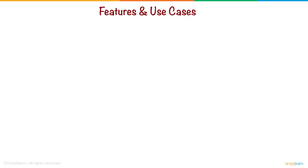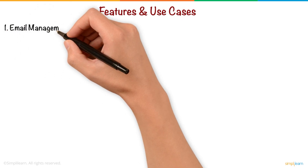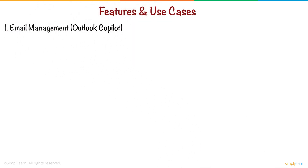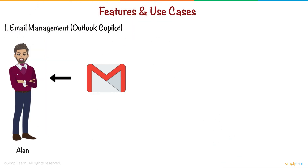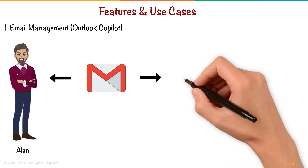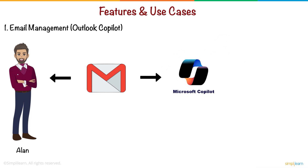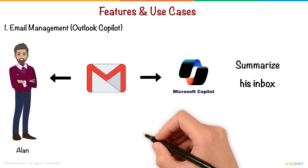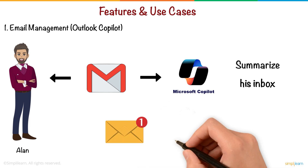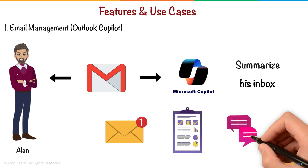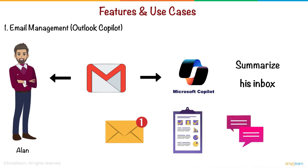Let's explore how Copilot helps Alan in different ways. Feature 1: Email Management — Outlook Copilot. Alan receives hundreds of emails daily. Instead of reading each one, he asks Copilot to summarize his inbox. Copilot highlights urgent messages, identifies action items, and even suggests replies.